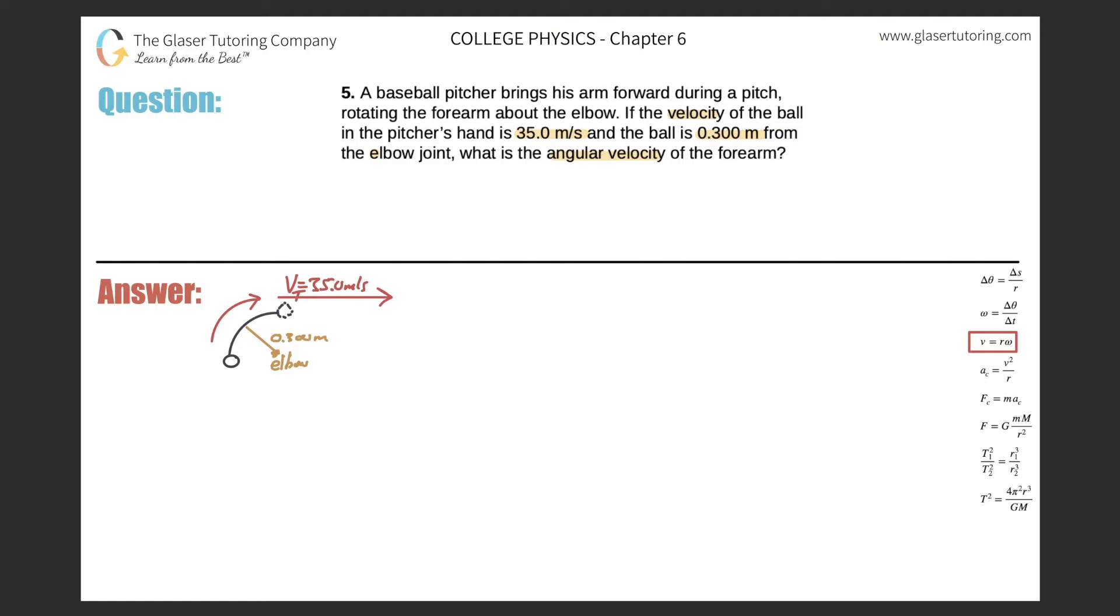This one is pretty straightforward. This says that the velocity - I would rather it be with a subscript of t so you remember it's the tangential velocity, or subscript of l to remind you it's the linear velocity - equals r times omega.